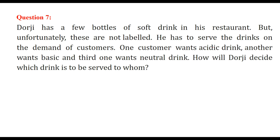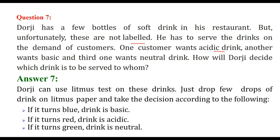Dorji has a few bottles of soft drink in his restaurant but they are not labeled. One customer wants an acidic drink, another wants basic, and the third wants neutral. How will Dorji decide? He can use the litmus test — drop a few drops of each drink onto litmus paper. If it turns blue, the drink is basic. If it turns red, the drink is acidic. If it turns green, the drink is neutral.